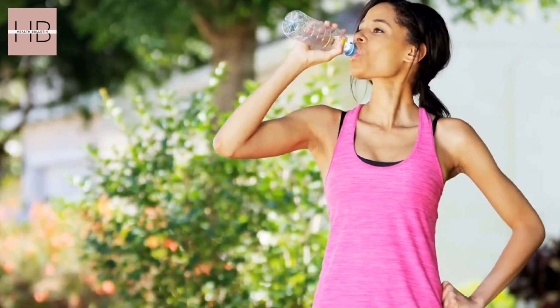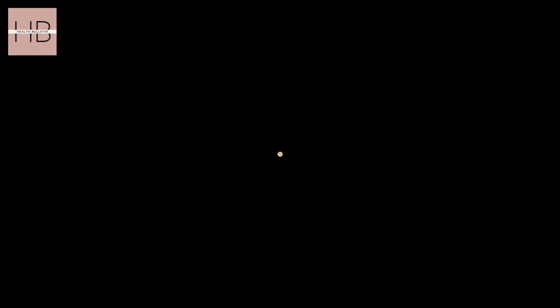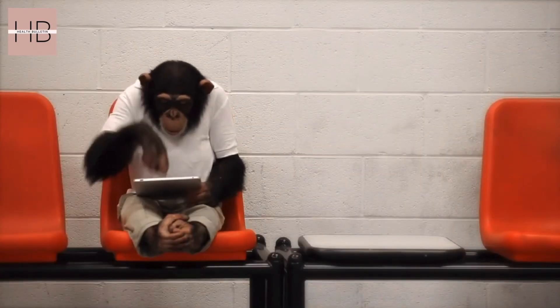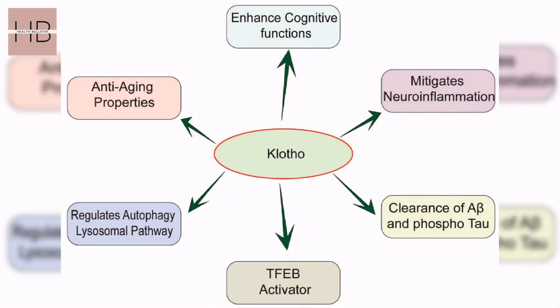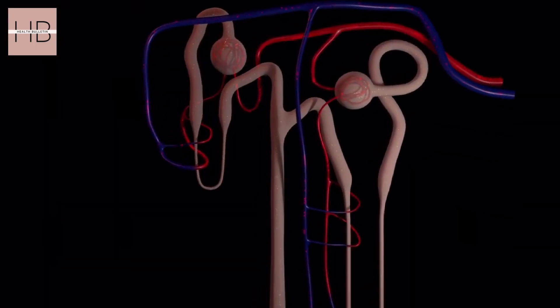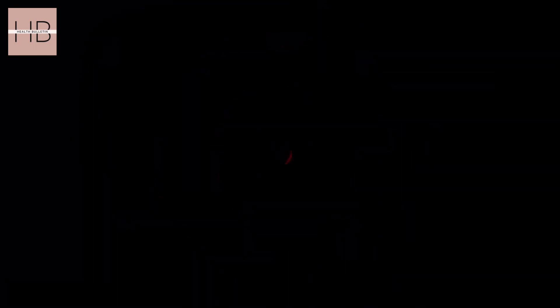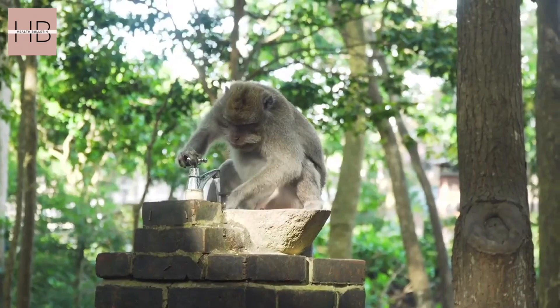New research shows protein boost improves brain function in older monkeys. Our kidneys produce a protein called klotho which regulates molecular pathways associated with aging. Although its mechanism of action is unknown, what is known about klotho is this: it boosts cognitive function in older monkeys.